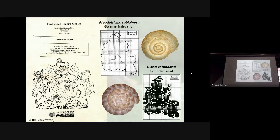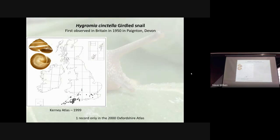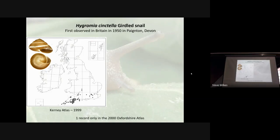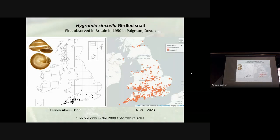But of course that goes out of date as well. An example of the limitation of these historical atlases is this particular shell, which was first described in Paignton, Devon in 1950. Interestingly, it was first described by a man called Alex Comfort — who wrote The Joy of Sex — he was also a conchologist. That snail's distribution as of 1999 is shown in the atlas, and you can see how it has spread throughout the country, even up into Scotland and moving more and more. I found it in my garden — I live in the middle of Reading.